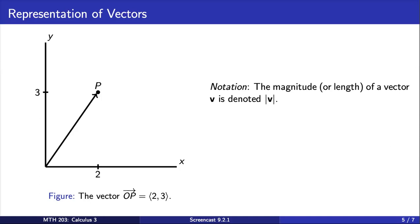We are going to take an opportunity here to quickly introduce some notation. The magnitude, or length, of a vector v is denoted using vertical bars that look like the familiar absolute value notation.